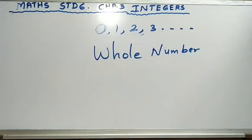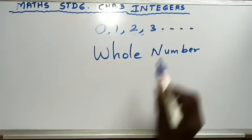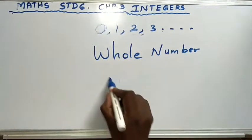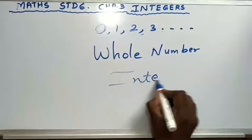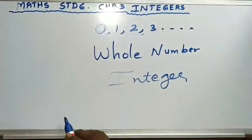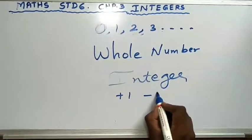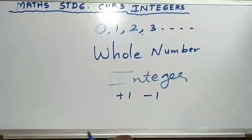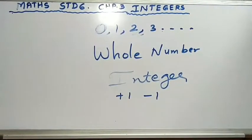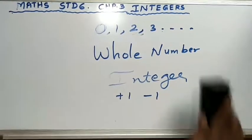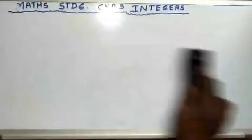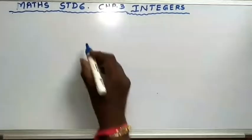Is it clear? There are other numbers besides whole numbers and natural numbers, and we call them integers. Integers have positive numbers as well as negative numbers. Are you confused? Let me clear your doubt. Let me make a number line.